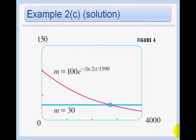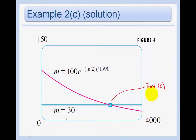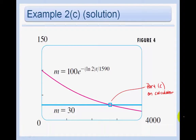Here's a graph of the decay. If we were in a calculator section and wanted to solve part c, we would just graph the equation, find where the mass hits 30, and use second calc intersect to find the answer.